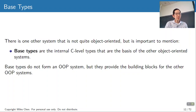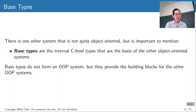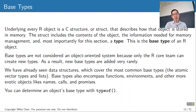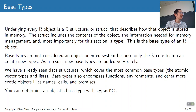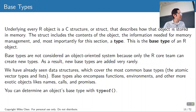We also have to talk about base types — these are the internal C-level types that the other object-oriented systems are built out of, things like lists and atomic vectors. They're technically not an object-oriented programming system, but they provide the building blocks. Base types include atomic vectors, lists, environments, and functions, plus more exotic ones like promises and calls. You figure out the base type by using typeof().